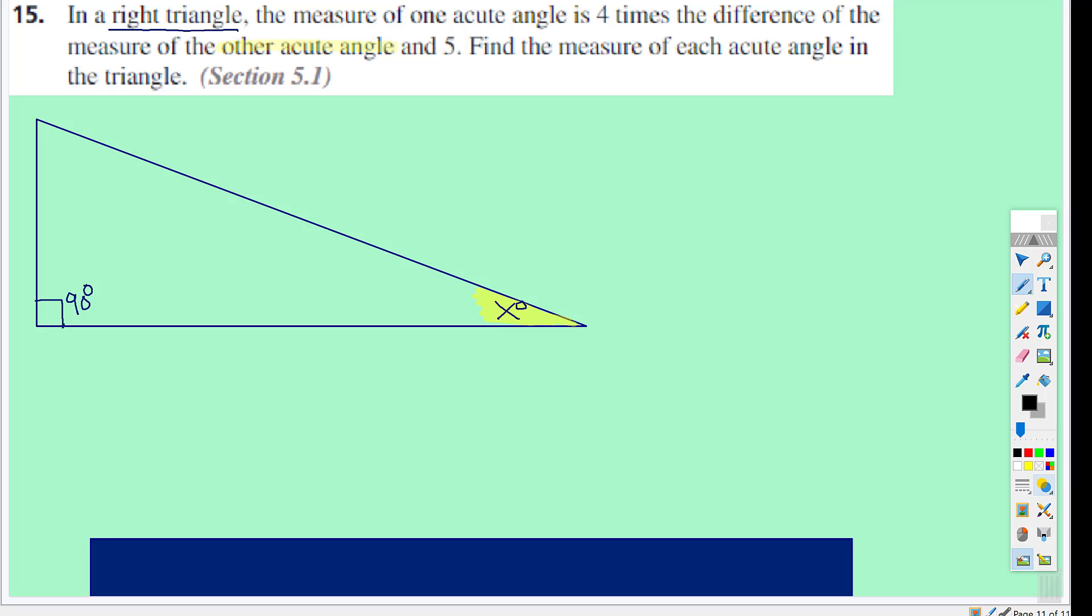Okay, so when you read the problem, drawing a diagram is a good idea, which is what I did here. In a right triangle, we know one of the angles is 90 degrees, so that's easy.